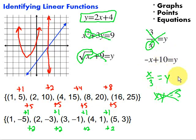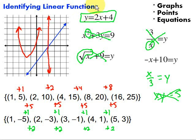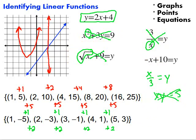So identifying linear functions — three different things we can look at. We can look at the graph, looking for a straight line that passes the vertical line test. If we're looking at points, we want a constant change in both the x values and the y values. And if we're looking at equations, variables can only be to the power of 1 — no squared terms, no radicals, no variables in the denominator, and no multiplying variables by each other. Hope this video was helpful. Keep working hard on your math — you can do it.